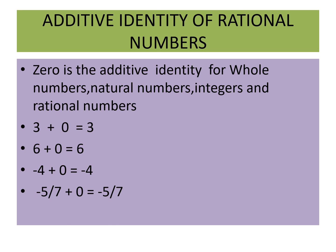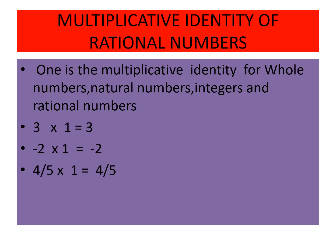Now we will see the additive identity of rational numbers. Additive identity means: when we add a number to something, we get the same number back. For example, 3 + 0 = 3. The identity is 0. For rational numbers, integers, natural numbers, and whole numbers, the additive identity is 0.